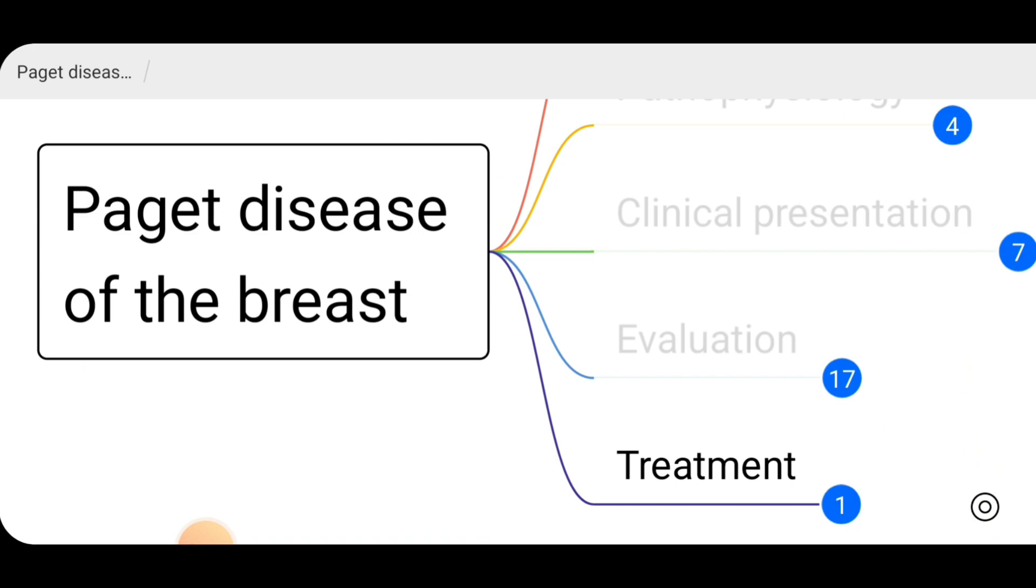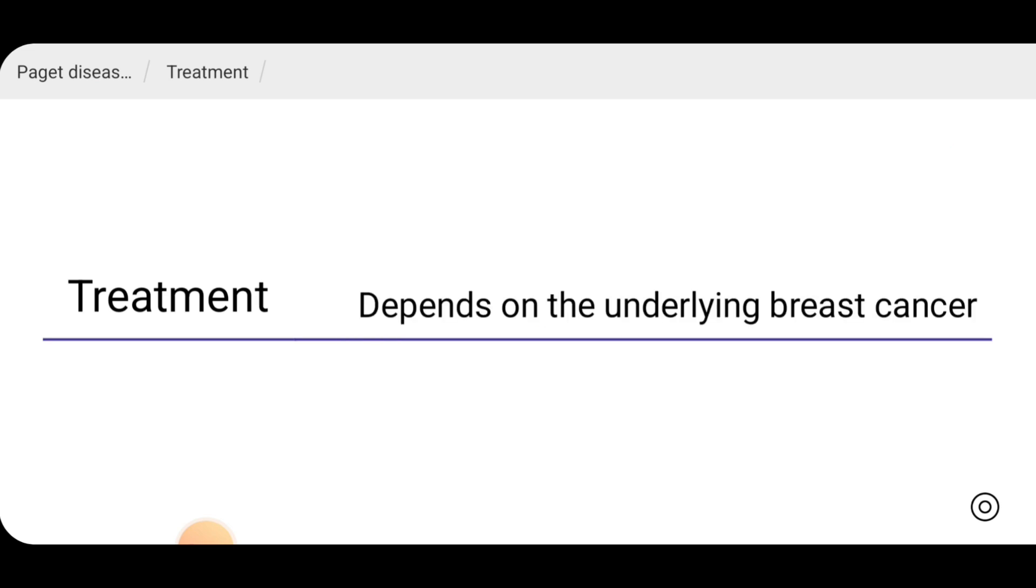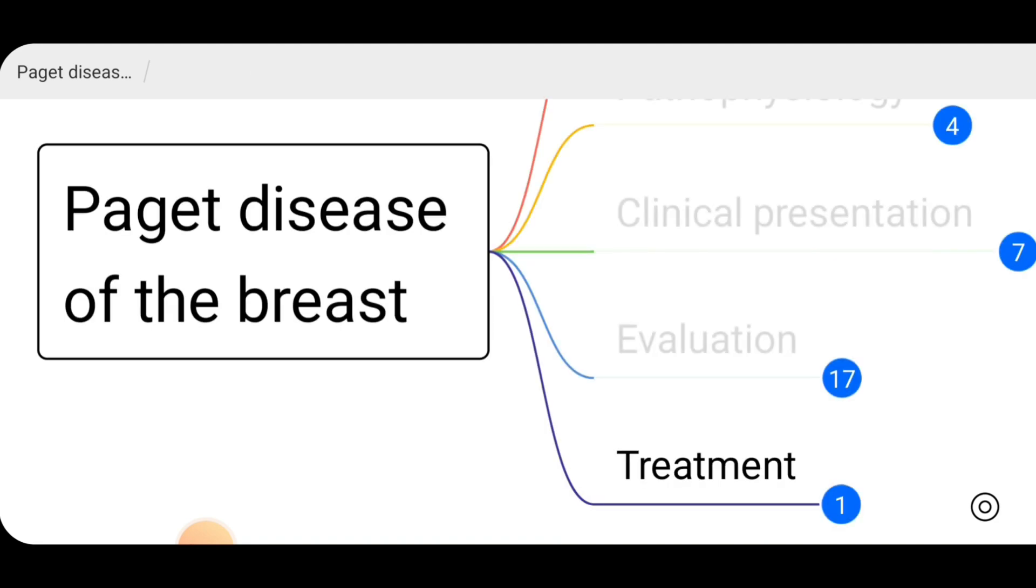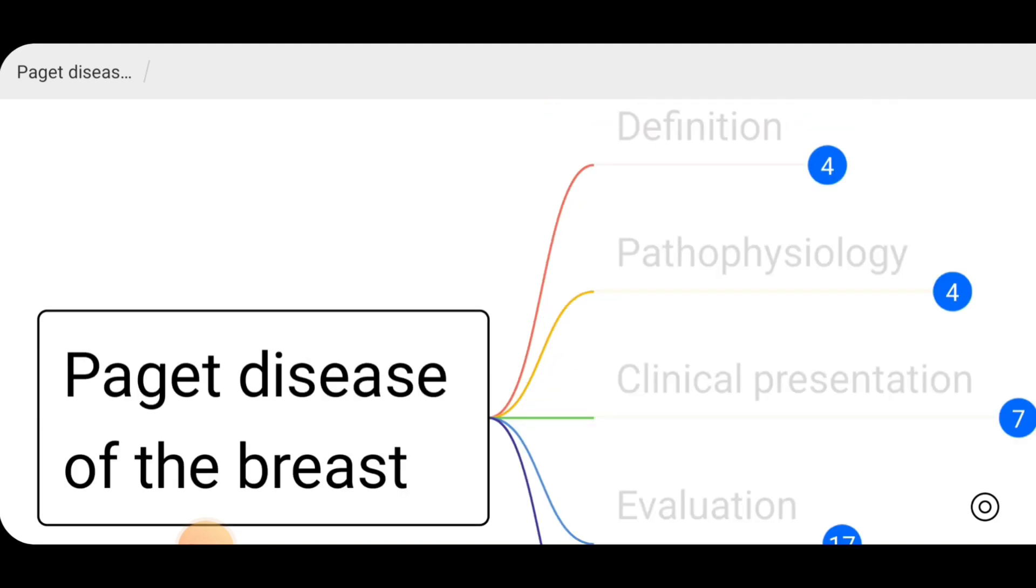The treatment of Paget disease, you know that it occurs usually with underlying breast carcinoma. Depending on the underlying breast cancer, its staging, we do further management. That is about Paget disease of the breast.